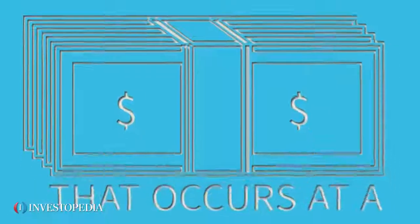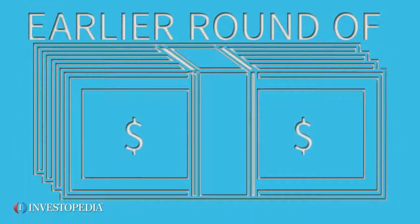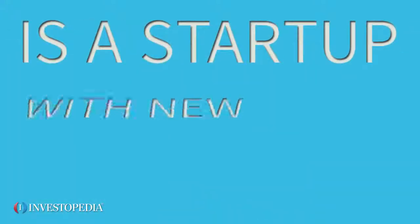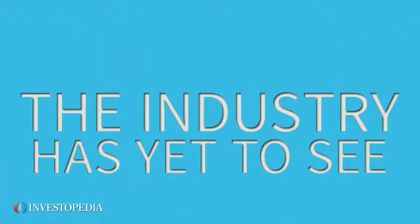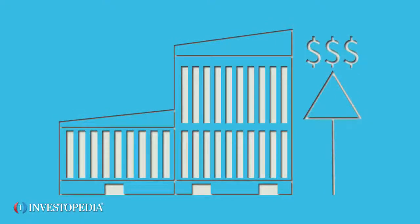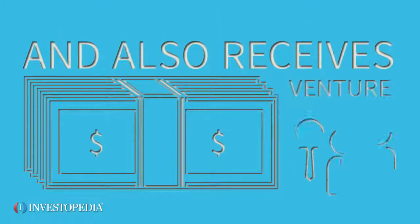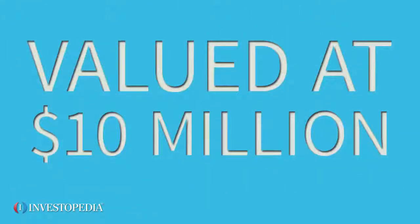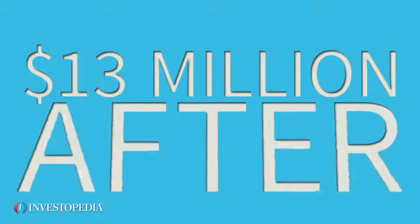A down round is a round of financing that occurs at a lower firm valuation than an earlier round of financing. Suppose XYZ company is a startup with new widget technology the industry has yet to see. The company raises capital by selling stock and also receives financing from venture capitalists. XYZ is initially valued at $10 million before receiving capital, and $13 million after.